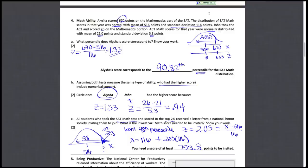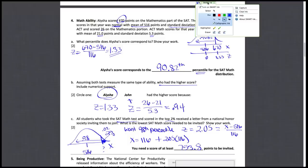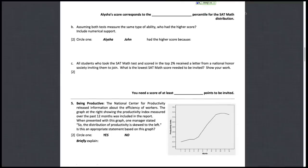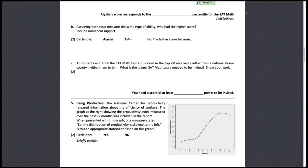All right, that's math ability. Let's take a look at our next question about being productive. We've got a graph here, it's showing us the productivity index over the past 12 months. So here's months, 1 through 12, and the productivity index, which is our response here that we're looking at and seeing how it's changed over the 12 months.